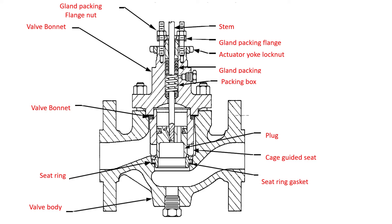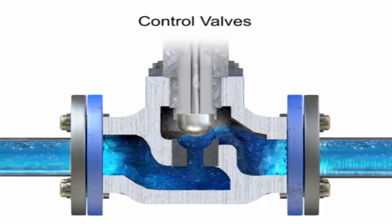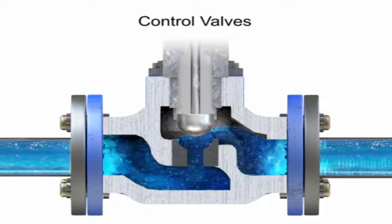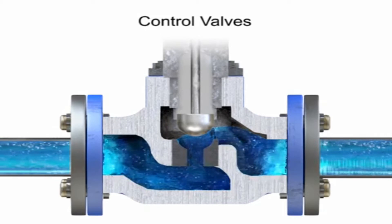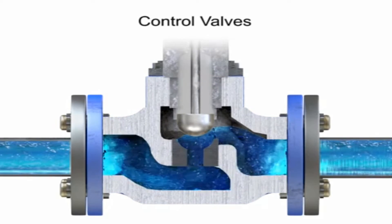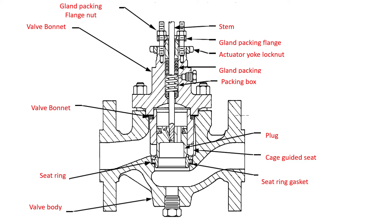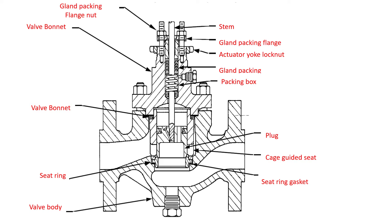Now, what is basically trim? The trim refers to the internal process-wetted components. The process fluid flows from inlet port to outlet port, and in between we have the plug stem system, the cage, and the seat ring. These components get wetted by the process fluid, so this area is called the trim.